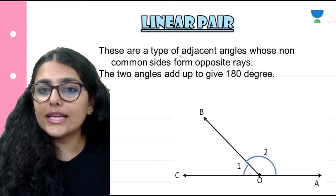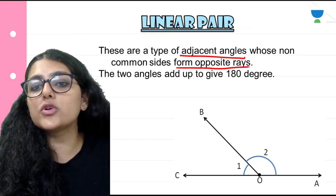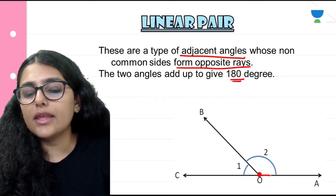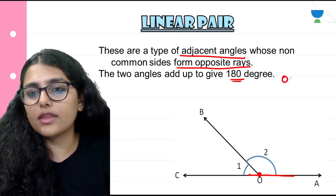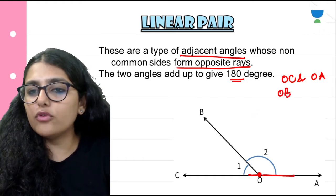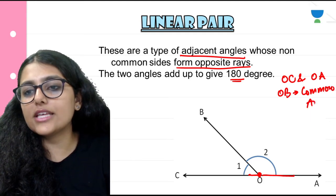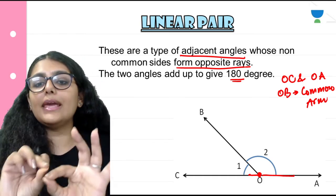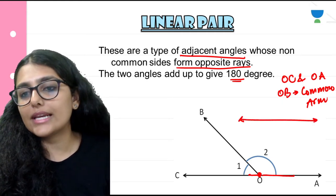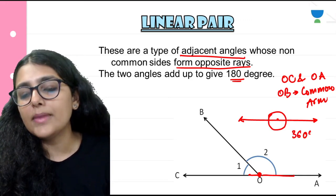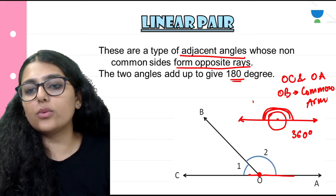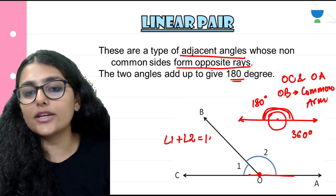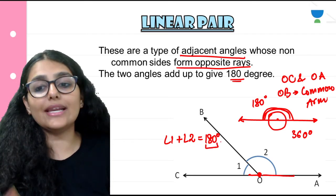These are a type of adjacent angles whose non-common sides form opposite rays, and the two angles add up to give 180 degrees — this is the linear pair. Here OC and OA are non-common arms, and OB is the common arm. They fulfill the definition of adjacent angles and form opposite rays, meaning they lie on a straight line. The sum of angles on a straight line is 180 degrees, so angle 1 plus angle 2 equals 180 degrees.